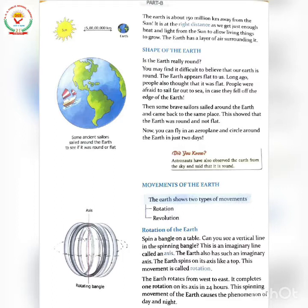People were afraid to sail far out to sea in case they fell off the edge of the Earth. Then some brave sailors sailed around the Earth and came back to the same place. Joh brave sailors the, unhone prithvi ke charo aur round liya aur same wapas usi sthan par aa gaye. This showed that the Earth is round and not flat.